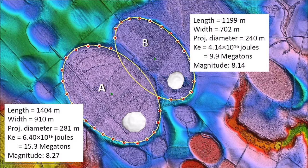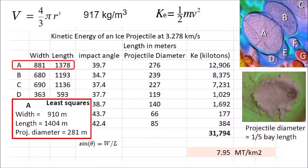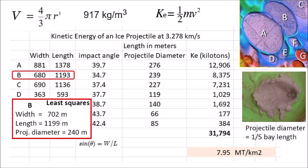Both impacts produced seismic vibrations exceeding magnitude 8. The impact making basin A had energy equivalent to 15.3 megatons of TNT, and basin B had energy equivalent to 9.9 megatons of TNT. The glacier ice projectiles that made these basins measured approximately one-fifth of the basin length. Compared to the least squares method, the earlier manual measurements underestimated the length of basin A by 26 meters (1.8%) and the width of basin B by 22 meters (3.1%). These corrected numbers increase energy estimates for the ice boulder bombardment in Marlboro County to more than 8 megatons per square kilometer, a bombardment that must have been accompanied by an extinction event and serious ecological damage.